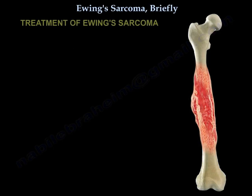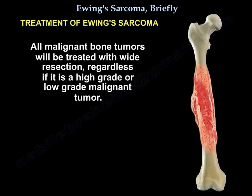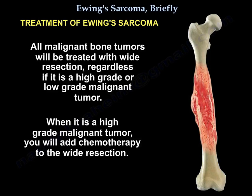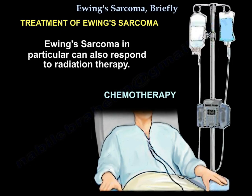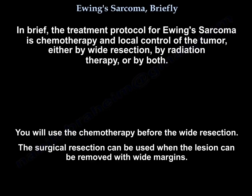Treatment of Ewing sarcoma: All malignant bone tumors are treated with wide resection, whether high grade or low grade malignant. When the tumor is a high grade malignant tumor, you will also use chemotherapy in addition to wide resection. Ewing sarcoma, in particular, can also respond to radiation therapy.